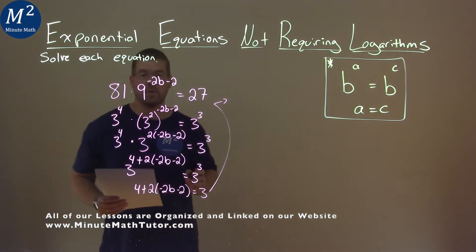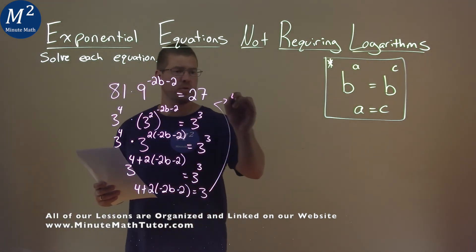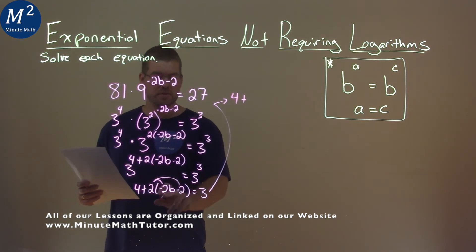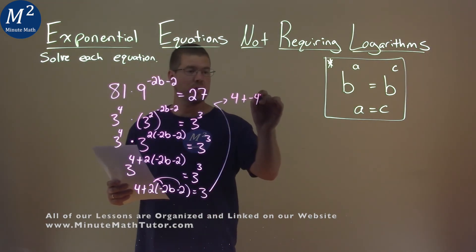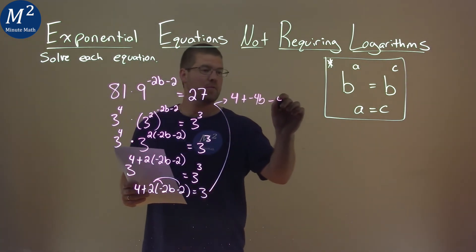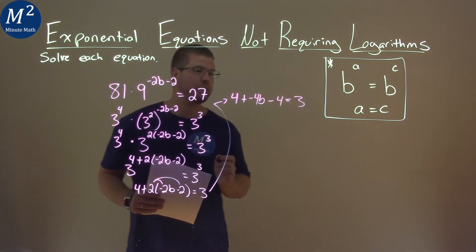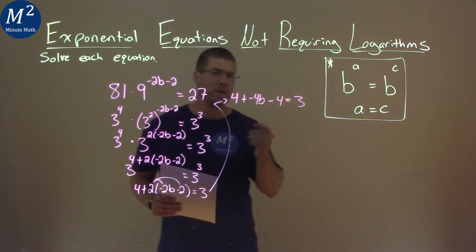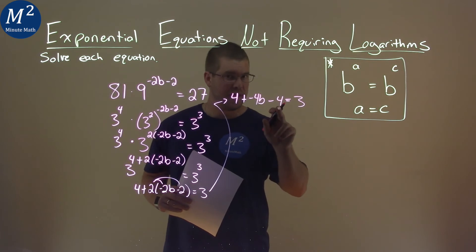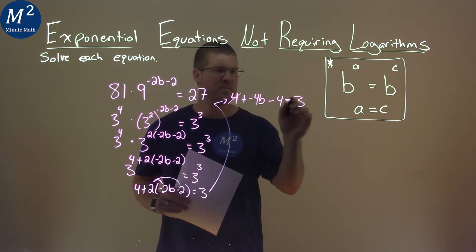Now let's finish solving up here. We're going to solve for b. So 4 stays there, plus let's distribute this 2 across. 2 times negative 2b is negative 4b, and 2 times negative 2 is negative 4. And that's equal to just that good old 3. We want to combine our like terms. 4 and negative 4 added is just 0, so they cancel each other out.